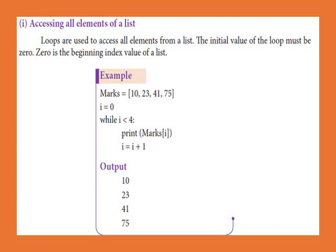Now we have a simple example program. We have a list of marks with 4 integer numbers: 10, 23, 41, 75. Here 10 is the 0th index, 23 is the 1st index, 41 is the 2nd index, and 75 is the 3rd index. So the total index is 0 to 3, and the total iteration steps are 4.